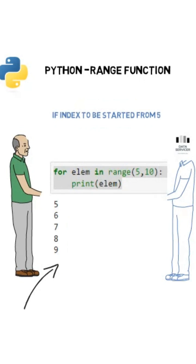If we want the start index from 5, we can simply do range(5, 10). So the index starts at 5 but ends at 9. As I said, it won't consider the last index.